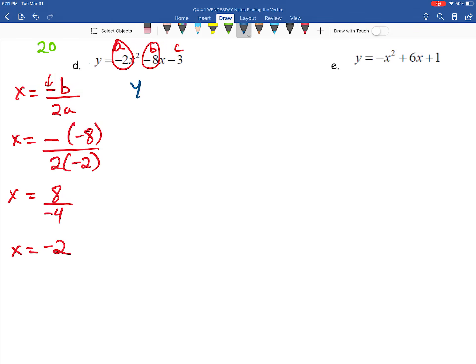Now we'll go ahead and plug in that value. We have y equals negative 2 times our x value, negative 2 squared. Again, because that was our x value we just found. We're going to plug them in. Minus 8 times negative 2 minus 3.